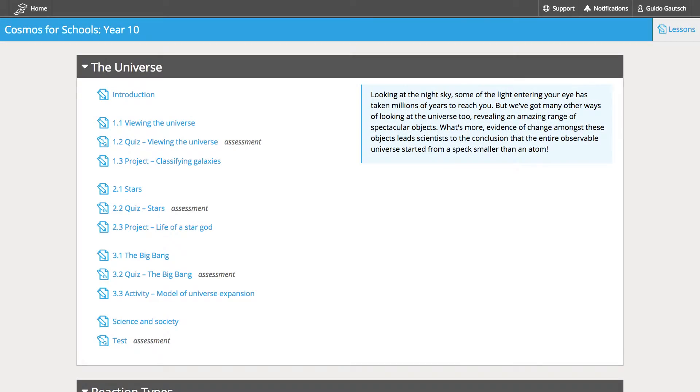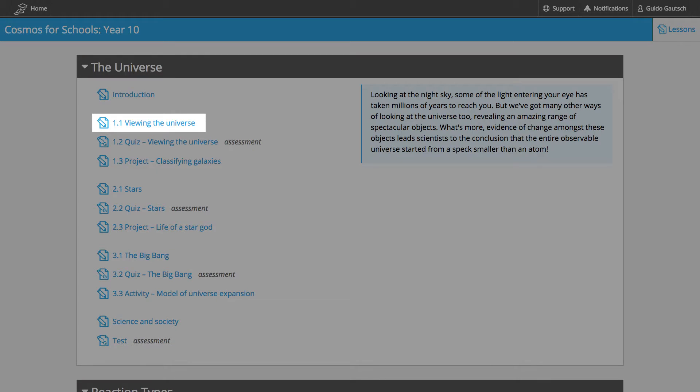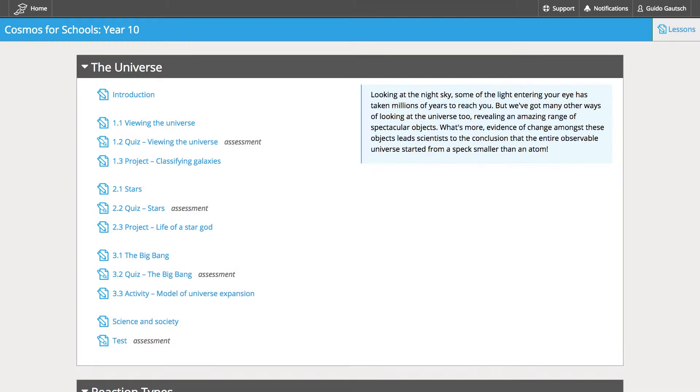It's got three lessons. Number one, we look at how we observe the Universe. In the second, we look at the life cycles of stars. And in the third, the expansion of the Universe and the Big Bang.